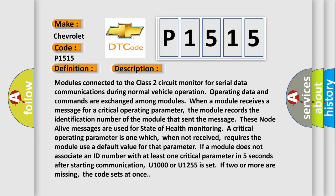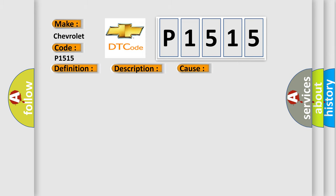This diagnostic error occurs most often in these cases: the Class 2 circuit is open, shorted to ground, or shorted to power; the PCM ignition power circuit has a high resistance condition; or the PCM main ground circuit has a high resistance condition.